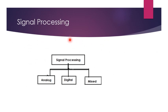In signal processing, there are three types: analog, digital, and mixed. Analog signal processing dominated prior to the 1970s. Between 1970 and 2000, digital signal processing gained dominance over analog. The current trend is mixed signal processing — a combination of digital and analog processing.